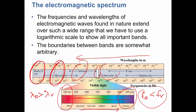Beyond ultraviolet there are gamma rays and X-rays — much smaller wavelengths but much higher frequencies. Energy associated with a wave is proportional to its frequency, so X-rays and gamma rays have much higher energy. Gamma rays are very dangerous; if you're exposed for a couple of hours, it can be fatal. X-rays are mildly dangerous — a short exposure may have medical benefits, but you don't want to do that every week.